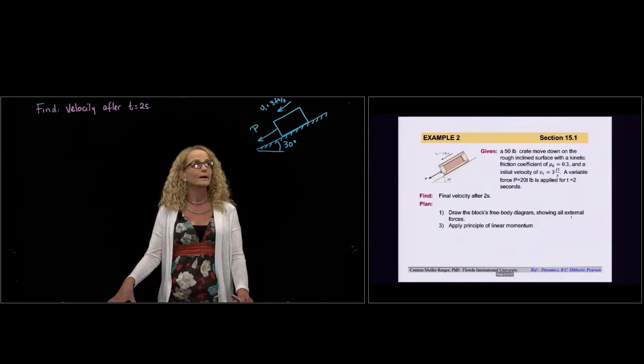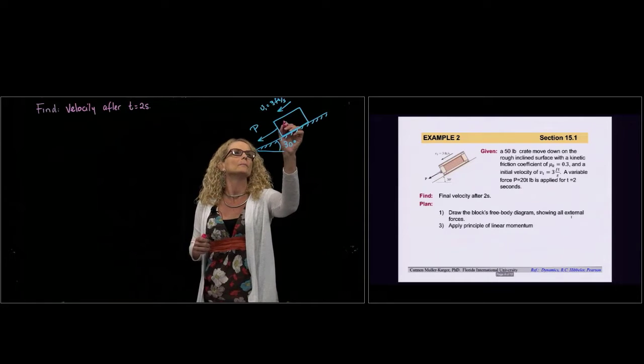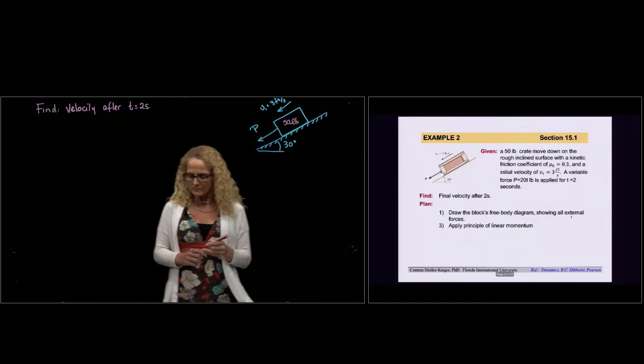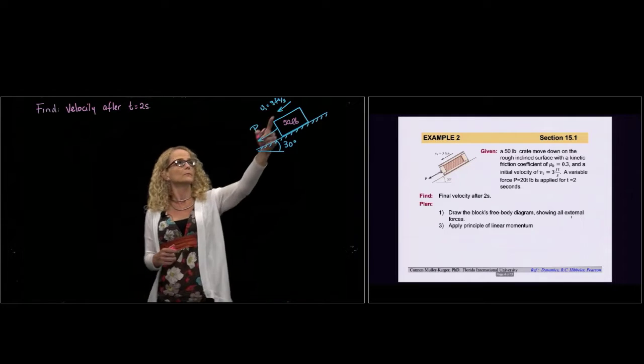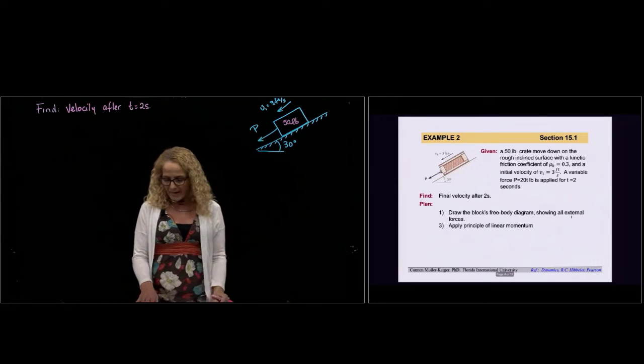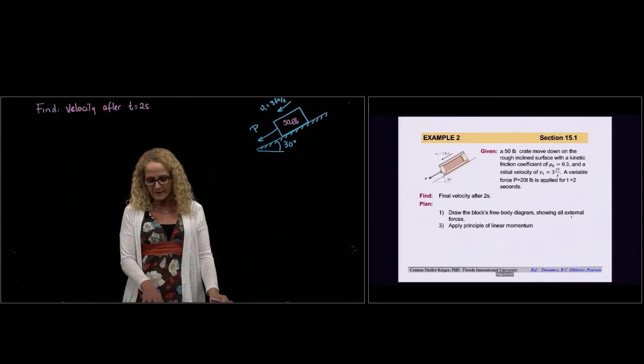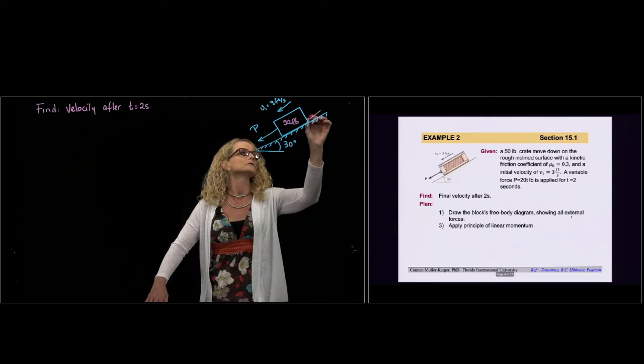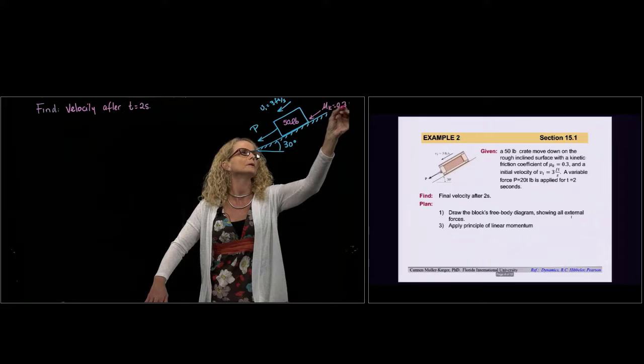So we have a 50 pound crate that moves down with a velocity of 3 feet per second, and it's on a rough surface with kinetic coefficient of 0.3.